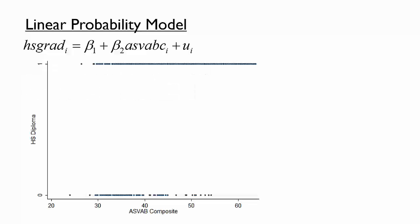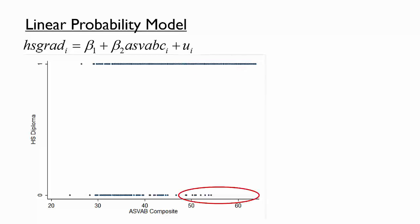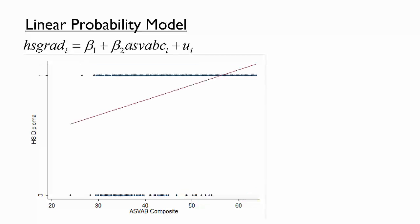Let's take a graphical look at our model by plotting the HSgrad variable versus the ASVAB composite. Given that the dependent variable is binary, the data points all lie along one of two horizontal lines — the bottom one for HSgrad equals 0 (individuals without a high school diploma) and the top one for HSgrad equals 1 (individuals with a high school diploma). There are many individuals with high ASVAB scores who do have a diploma, but few with high ASVAB scores who do not. By estimating a linear regression, we are finding the best fit line that minimizes the sum of squared residuals. We should certainly expect a positive slope given that there are few values of HSgrad equals 0 when ASVAB is relatively large.